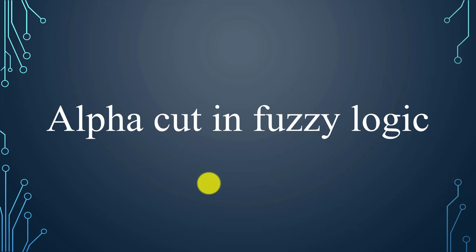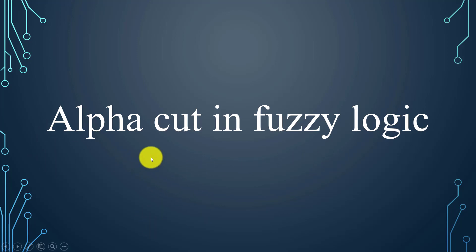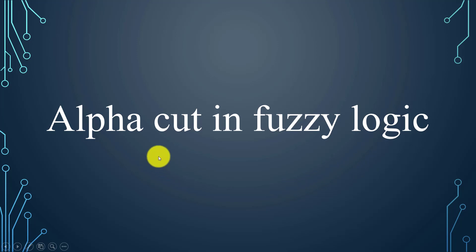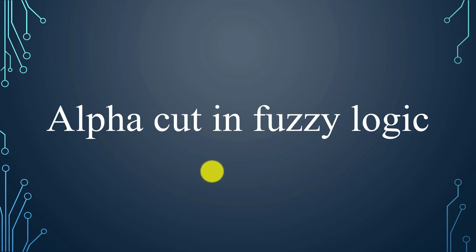Hello friends. In this video we are going to discuss what is alpha cut in fuzzy logic. Alpha cut is one of the properties of fuzzy logic or fuzzy set. We are going to discuss the alpha cut definition, how it is represented, the condition for alpha cut, and we will also discuss one problem on how to find the alpha cut. So let's start.